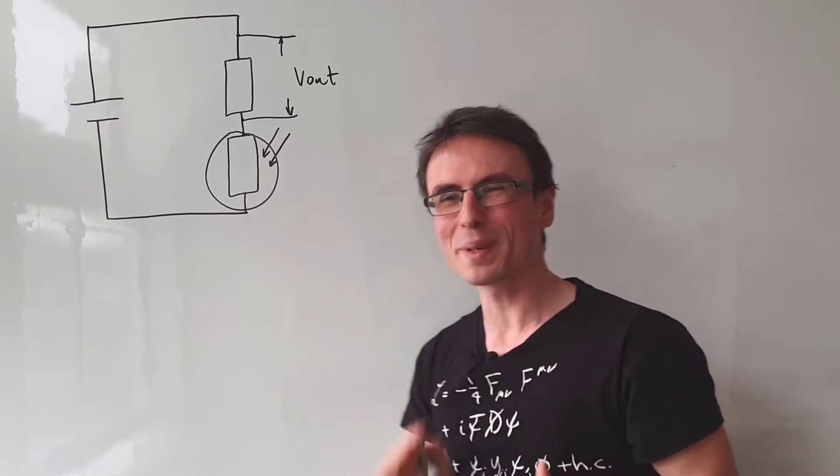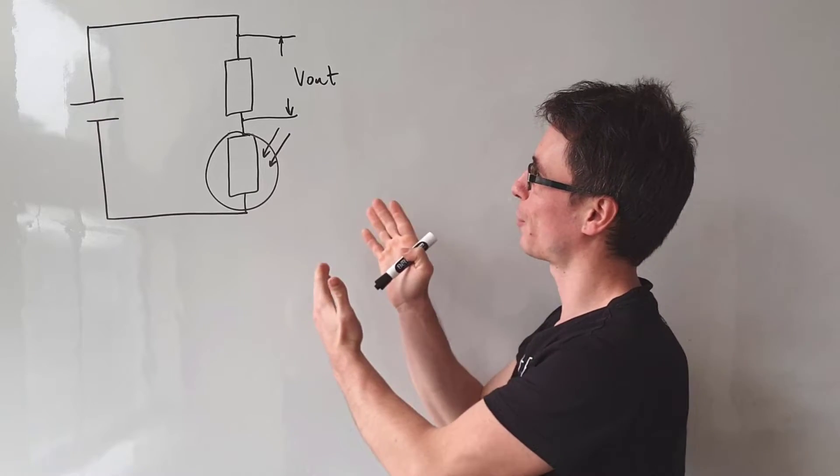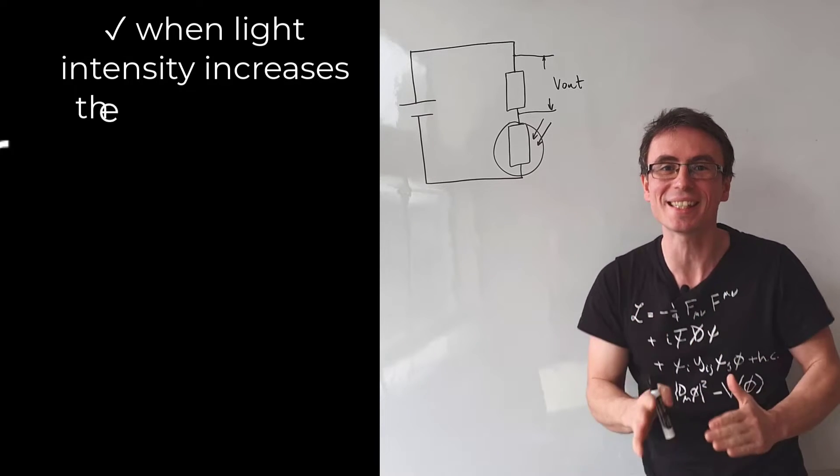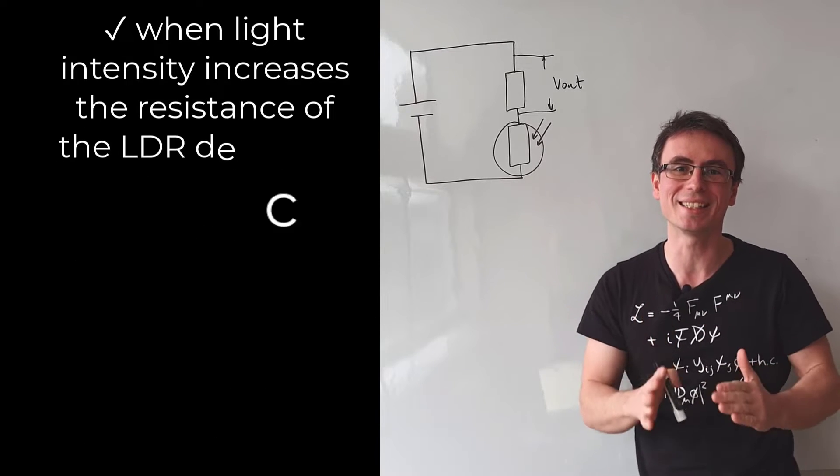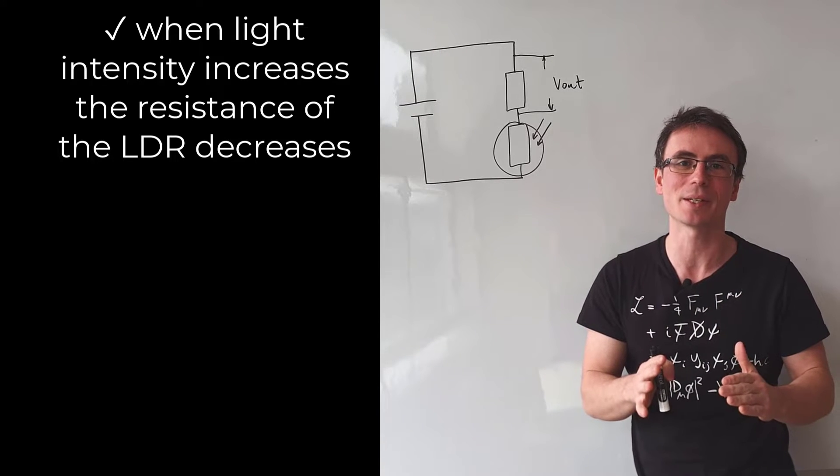We want the voltage to be higher than five volts when the potential divider is under very bright light. When light intensity increases, the resistance of the LDR decreases and the resistance of the circuit decreases.